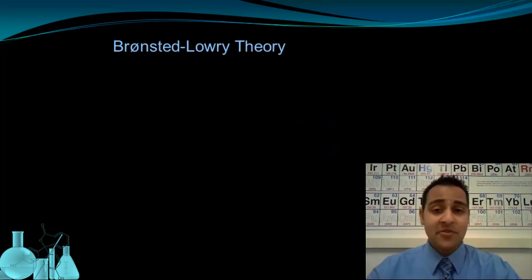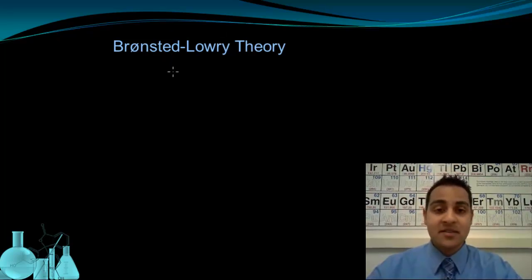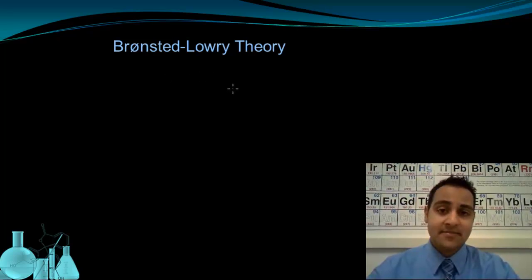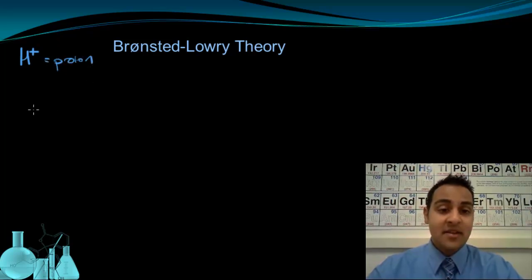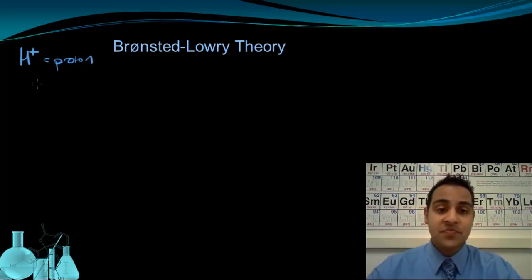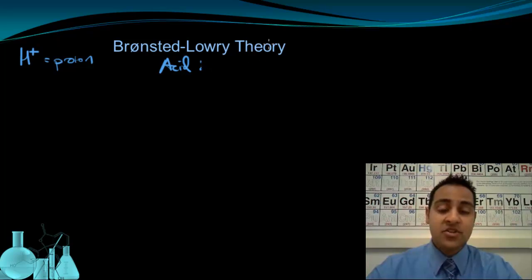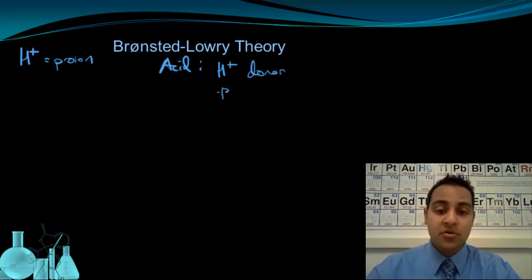That brings us to the Bronsted-Lowry theory. These are two scientists that worked on acids and bases and came up with this definition basically independently in different places, but at about the same time, so we credit both of them with this understanding. Before we talk about what they actually said, it's important to recognize that the hydrogen ion is simply a proton. A regular hydrogen atom is simply one proton with no neutrons and one electron, so if it loses an electron and gains a positive charge, all that's left over is a proton. Bronsted-Lowry defined an acid as a substance that donates a proton — an H+ donor, or a proton donor.